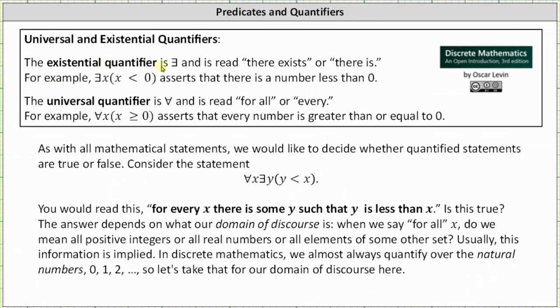The existential quantifier looks like a capital E facing the wrong direction and is read there exists or there is. For example, the notation shown here is read as there exists an x such that x is less than zero.